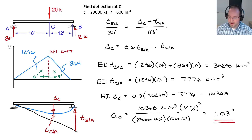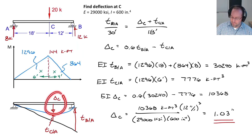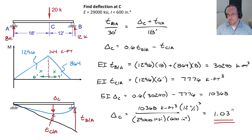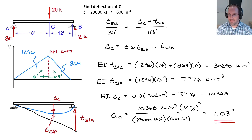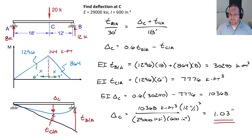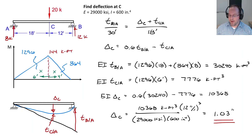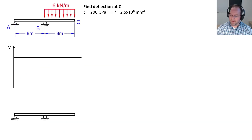That displacement is downwards based on the direction of the deflected shape. Drawing the deflected shape is very important in the moment area method so we can understand direction and properly consider these tangents. Let's look at another example with parabolic moment diagrams to see how that works in practice.